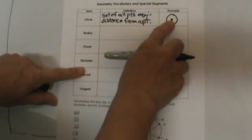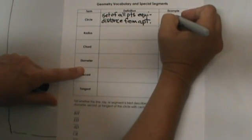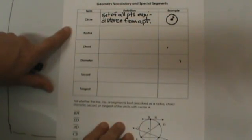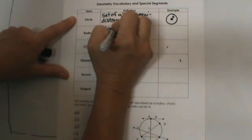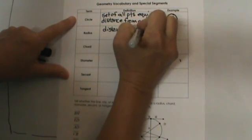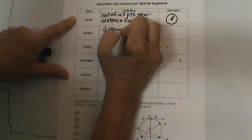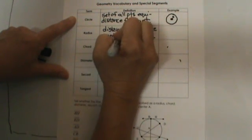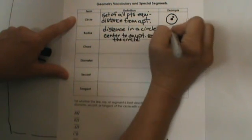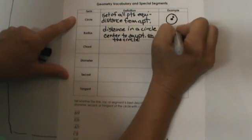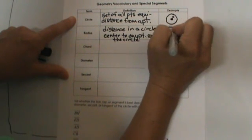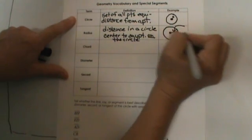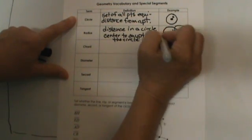When we name circles we always name them by the center. So if this is circle P, then the point in the center is P. Radius — what is a radius? The radius is the distance in a circle from the center to any point on the circle. So if we are drawing with that string, the string is our radius.